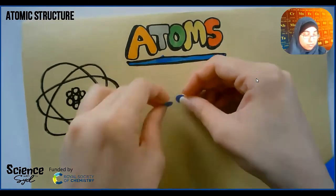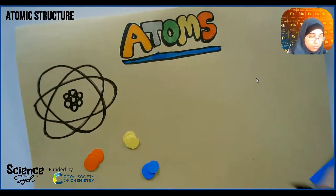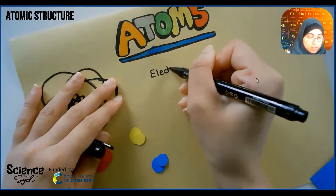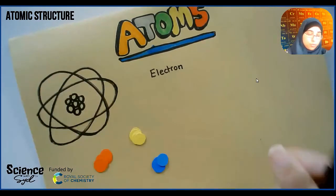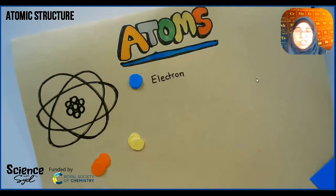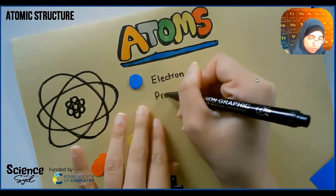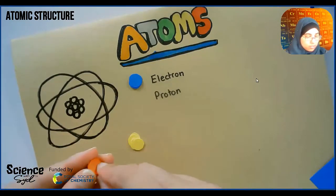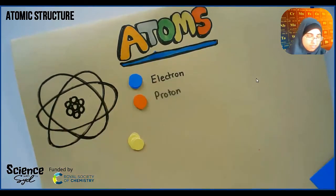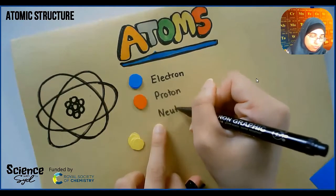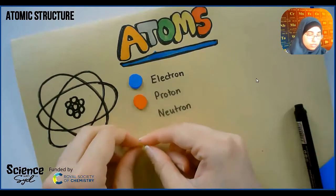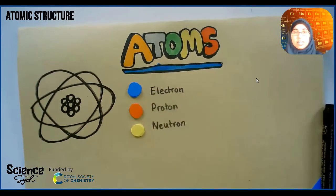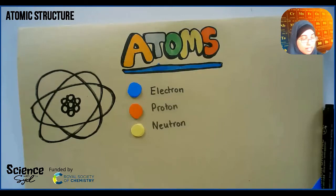We're going to call these little particles different names. So I'm going to do a little key. The first one is going to be called an electron — and I'm going to make electrons blue. The next one is going to be called a proton. And the next one we're going to have is a neutron — and the neutron is going to be yellow. So I've made a little key here of three different colored particles. We're going to call them particles — small little bits that we find in things.